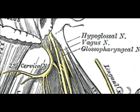After passing deep to the posterior belly of the digastric muscle, it passes to the submandibular region to enter the tongue. It supplies motor fibers to all of the muscles of the tongue, except the palatoglossus muscle, which is innervated by the vagus nerve, cranial nerve X.